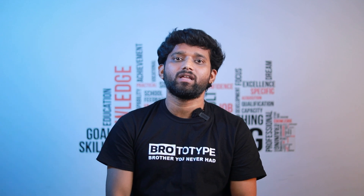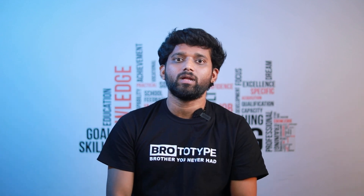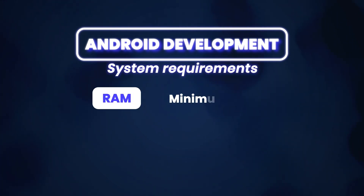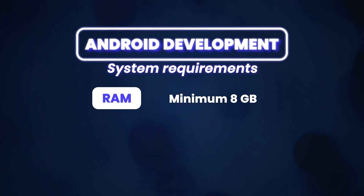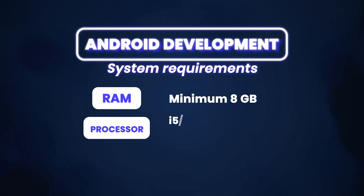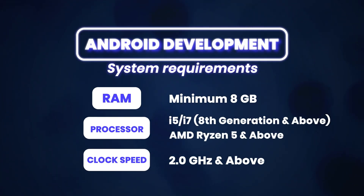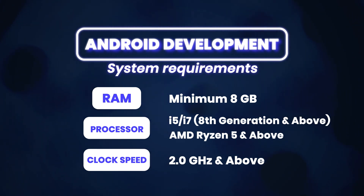You can select Android development as your domain. There is no specific difference in processor, however you need to focus on RAM. If you select a laptop for Android development, at the minimum it is 8GB. You can use 8GB at least on average. If you are developing an app it will run smoothly. For the processor, i5 or i7, 8th gen, 2GHz clock speed is recommended.